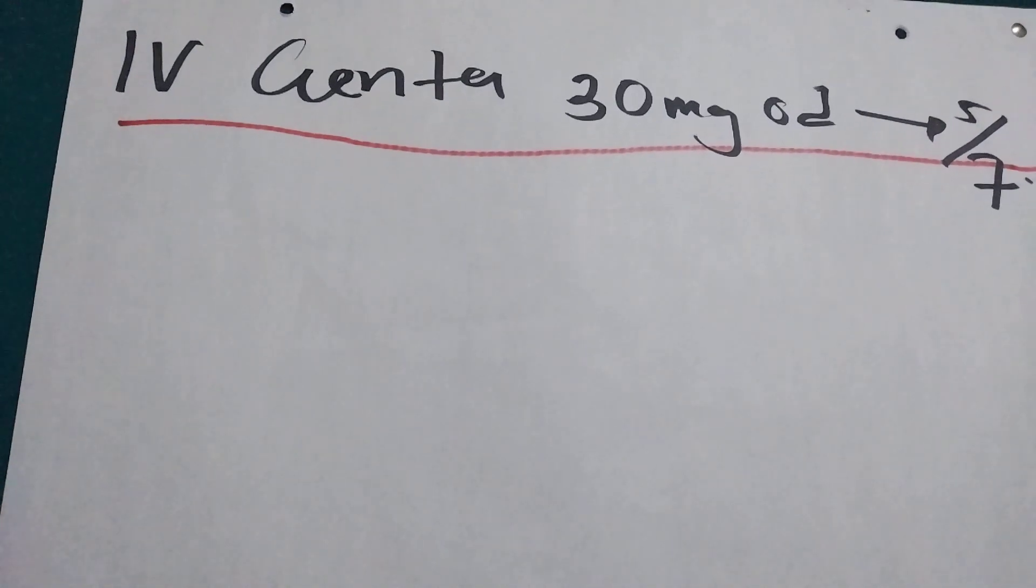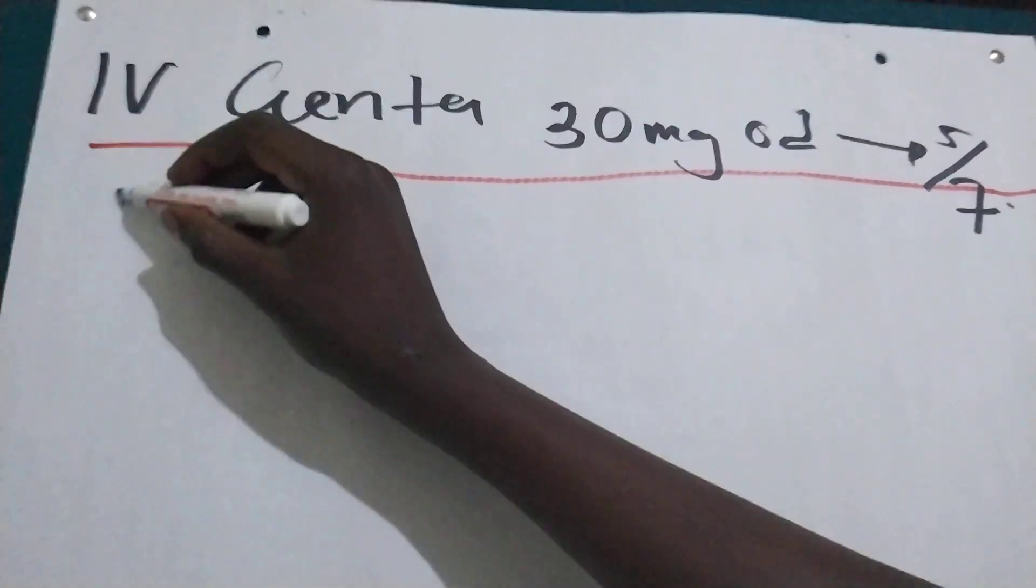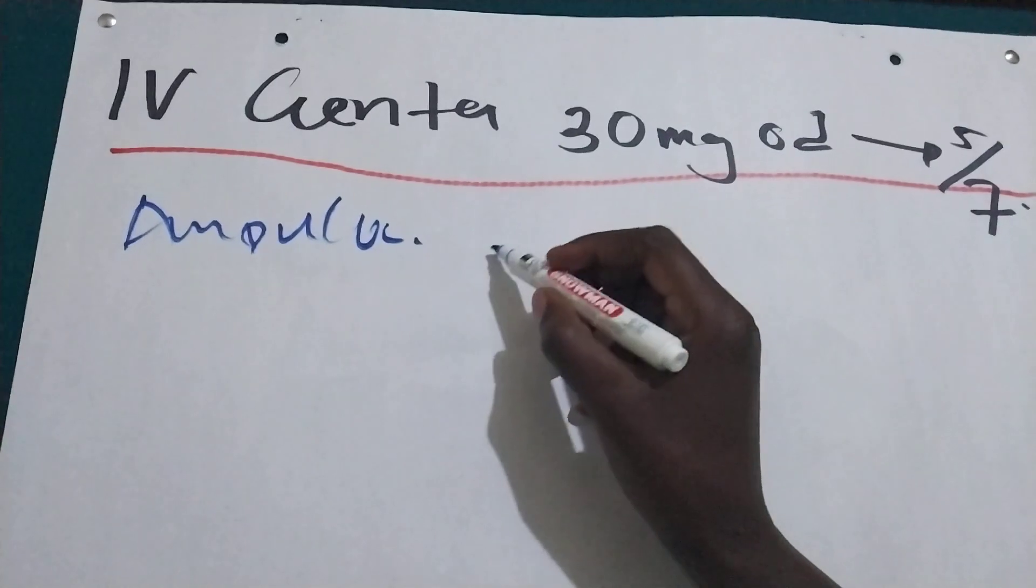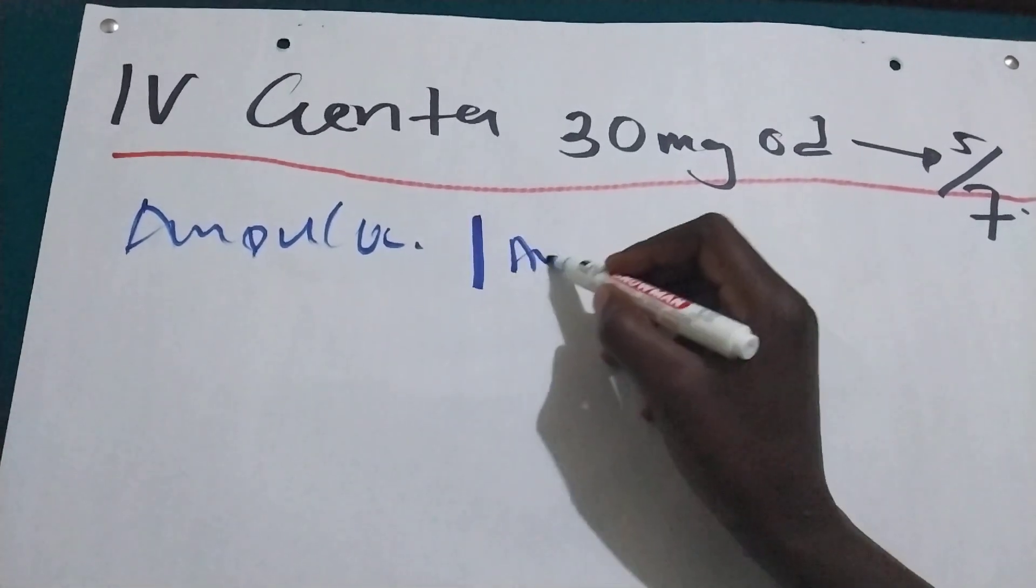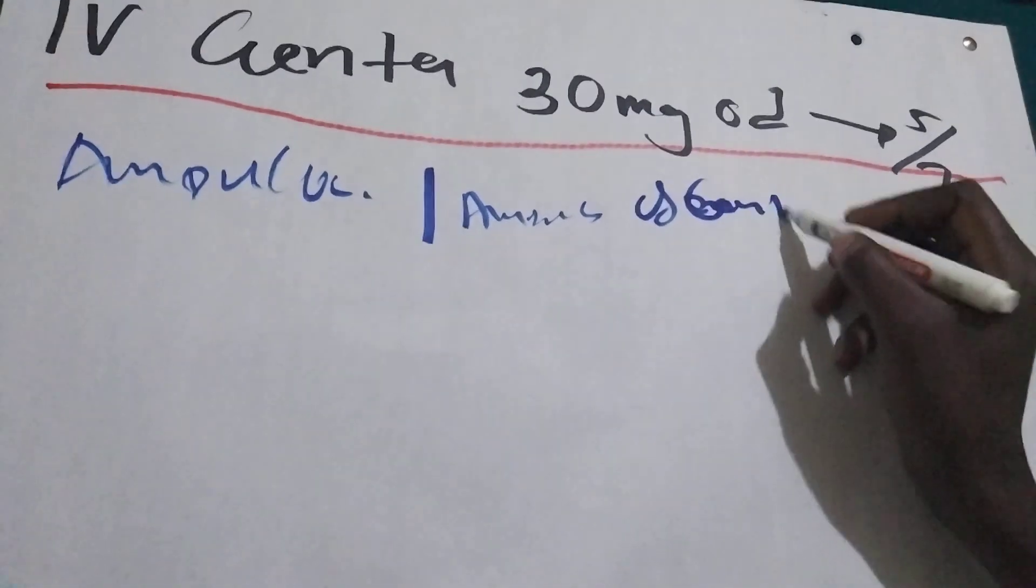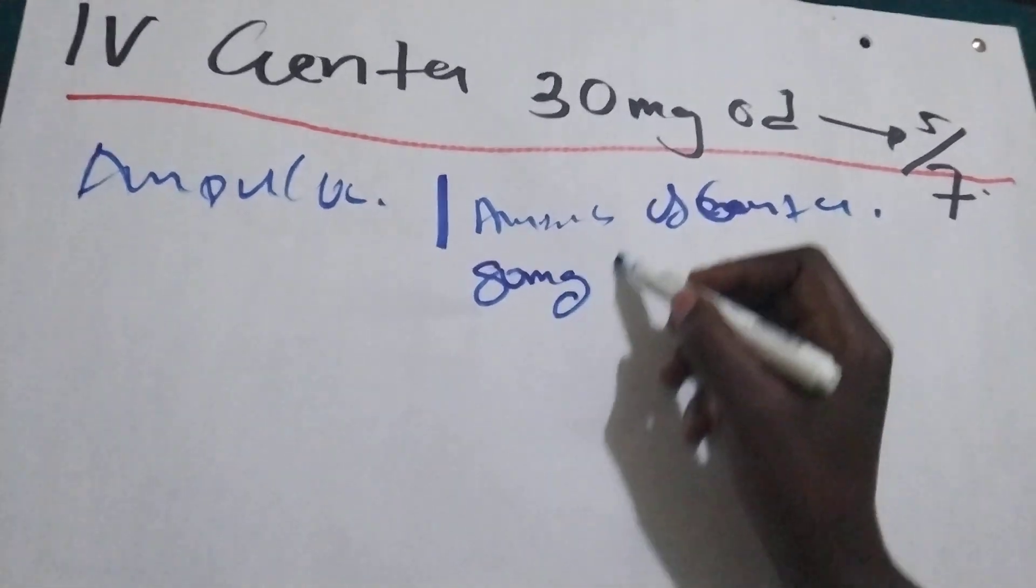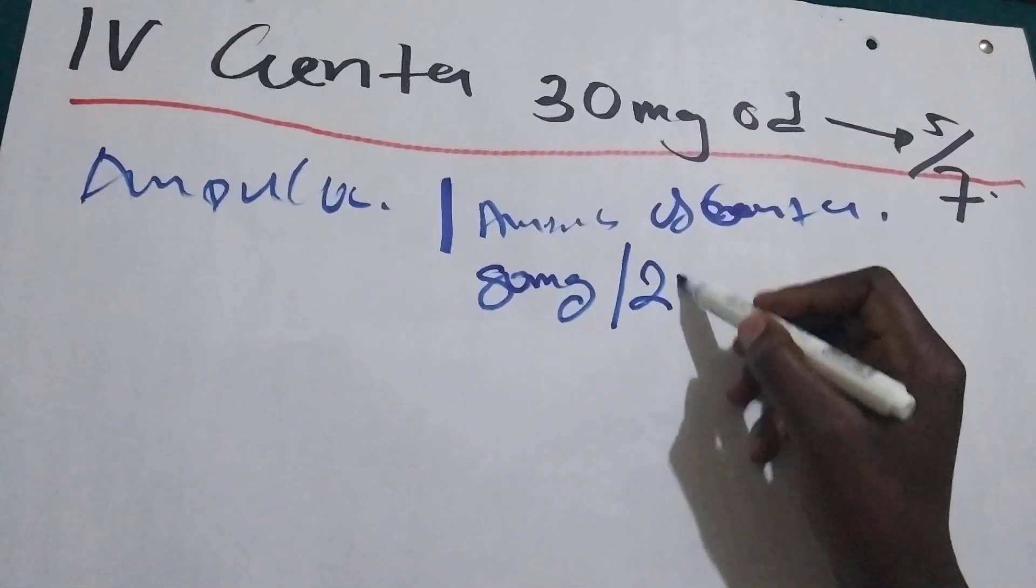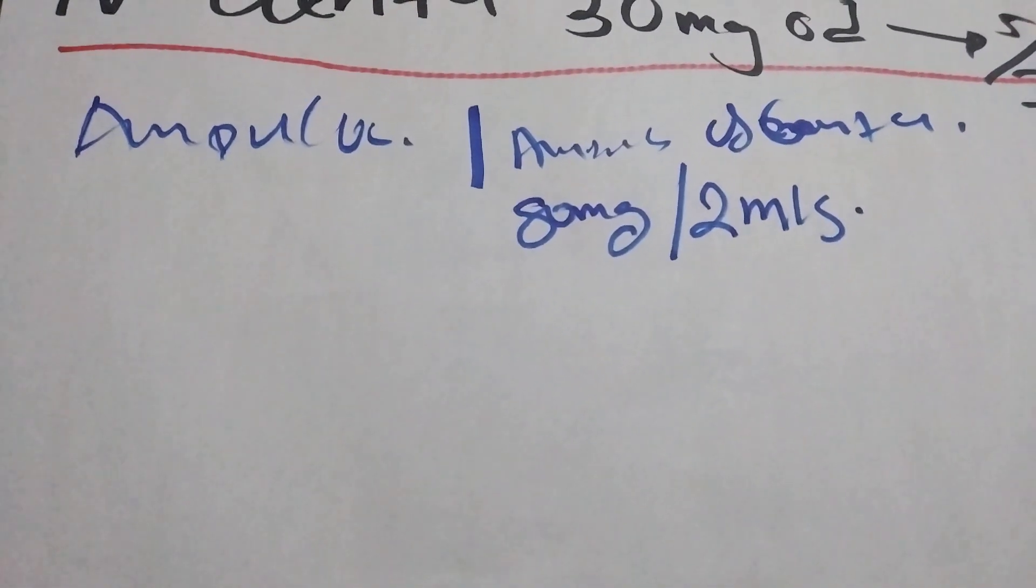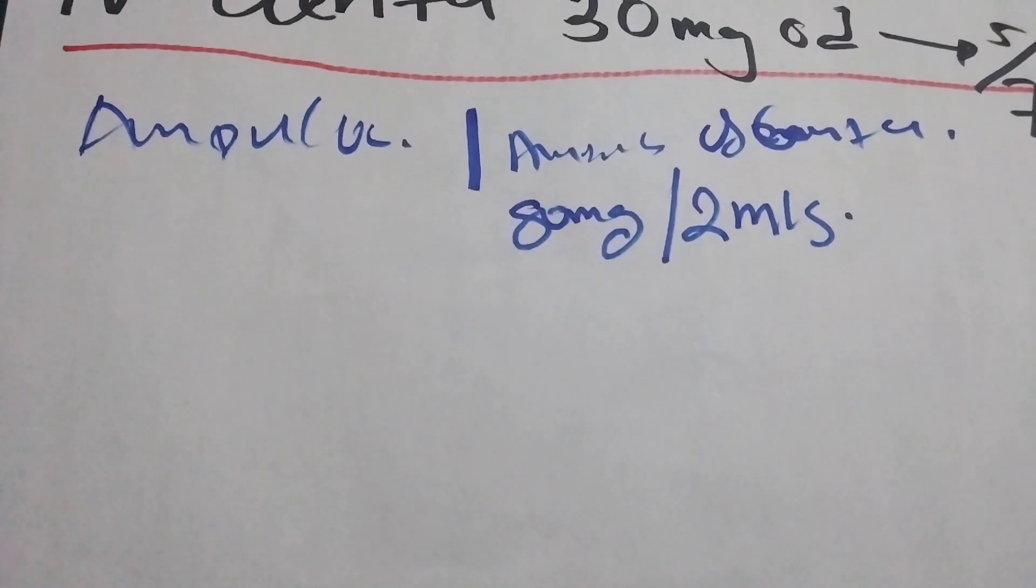So IV gentamicin is in ampoules. One ampoule of gentamicin has 80mg of gentamicin in 2mLs. For IV gentamicin I'm going to show you for neonate also, and then for older children, and then for adults.